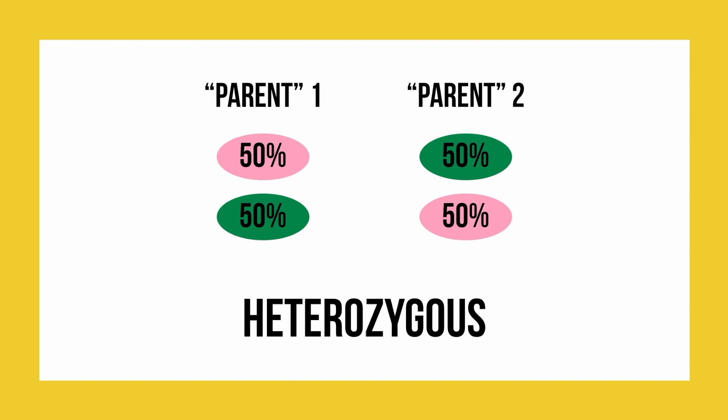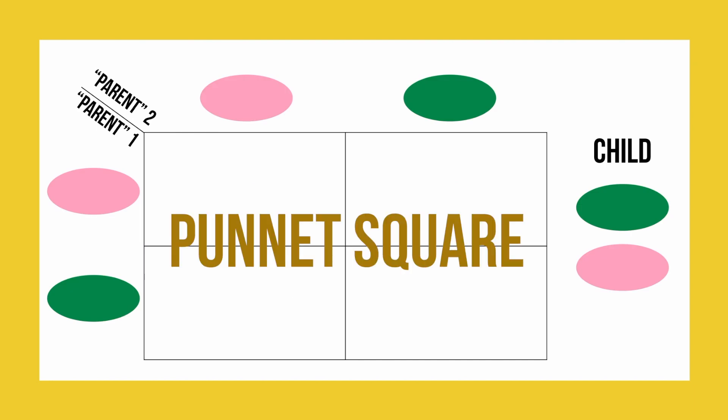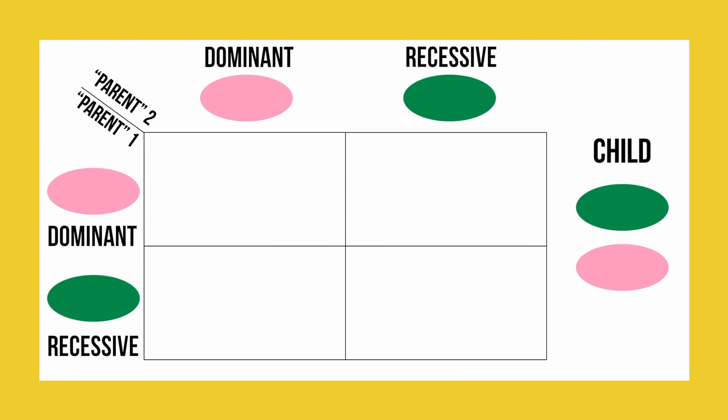We can now take this knowledge and put it into a Punnett square. Our Punnett square has two sides, one side for each parent. On our vertical side, we wrote the genes that parent 1 had, and on our horizontal side, we wrote the genes that parent 2 had. To find out what each child will be, we add rows and columns and apply the same rules as before. In the top left square, you have the combination of pink from parent 1 and parent 2, resulting in a pink child.